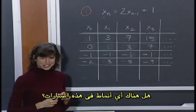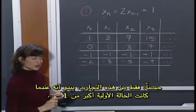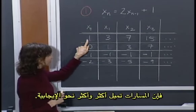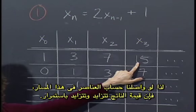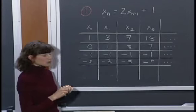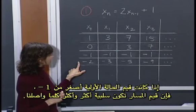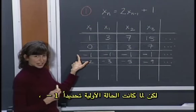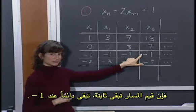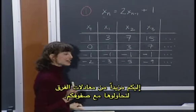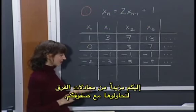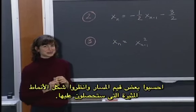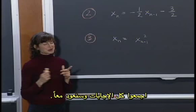So are there any patterns in these trajectories? It looks like when our initial condition is greater than minus 1, the trajectories tend to get more and more positive. When our initial condition was less than minus 1, the trajectory became more and more negative. But when our initial condition was exactly minus 1, the trajectory always stayed at minus 1. Here are a few more difference equations for you to try with your class — choose some initial conditions, compute a few trajectories, and see what kinds of interesting patterns you can discover.